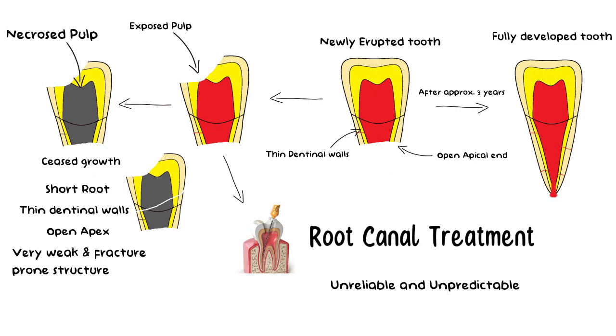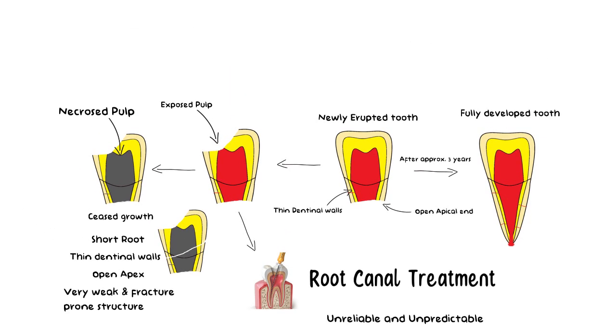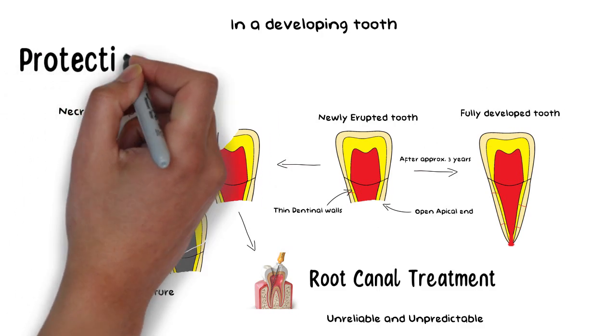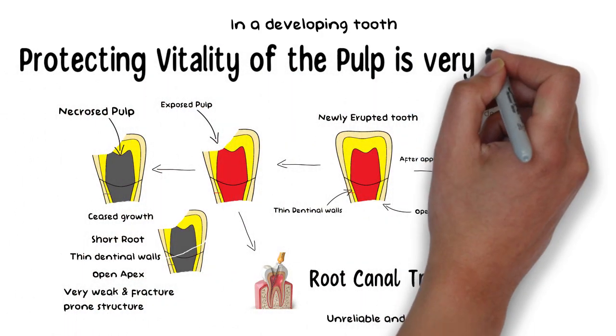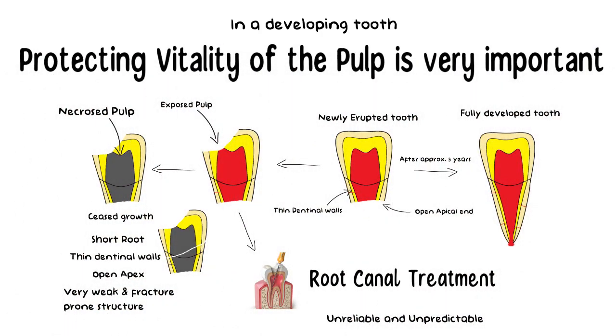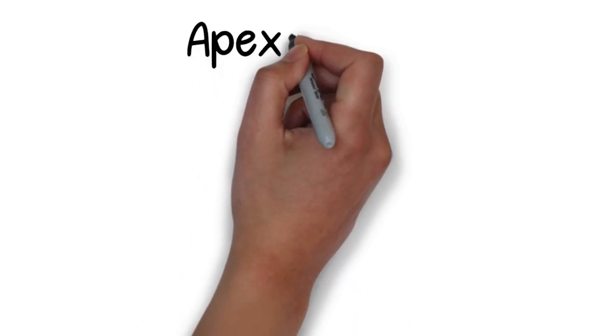Hence, protecting the vitality of the pulp in such developing teeth is really important in order to promote continued root development and achieve apical end closure. A number of procedures have been suggested to counter this problem. One such procedure is Apexogenesis.